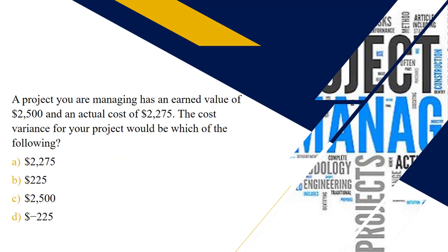Next question: as project managers we work with numbers. A project you are managing has an earned value of $2,500 and an actual cost of $2,275. The cost variance for the project would be which of the following? Cost variance is computed by earned value minus actual cost. We have earned value of $2,500 minus actual cost of $2,275, which gives us $225 — choice B. Make sure you remember that formula.